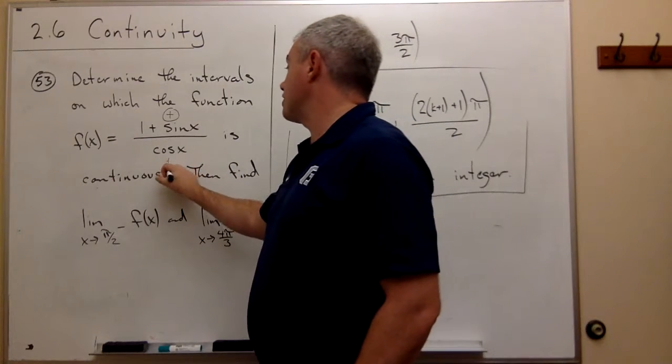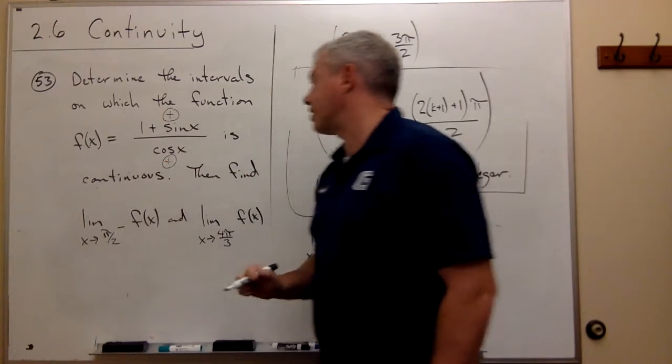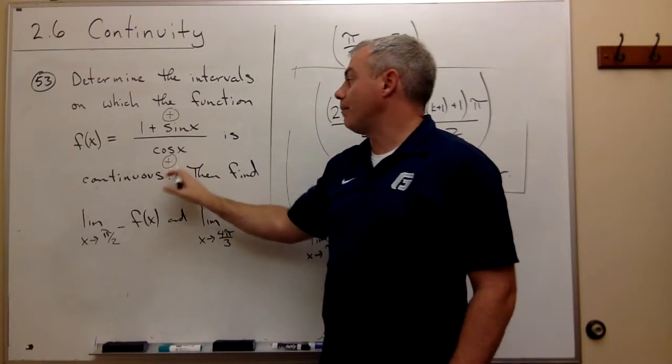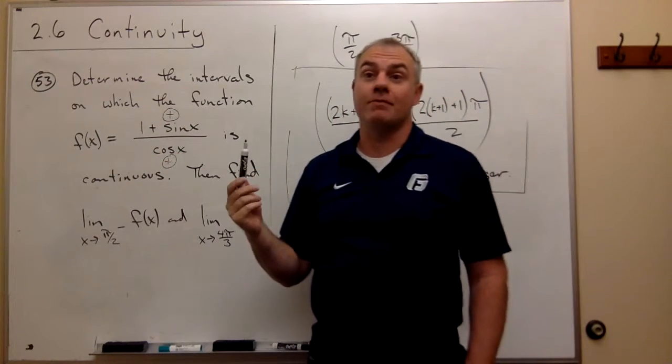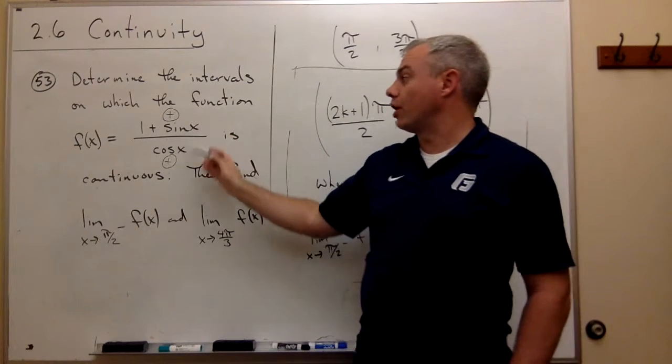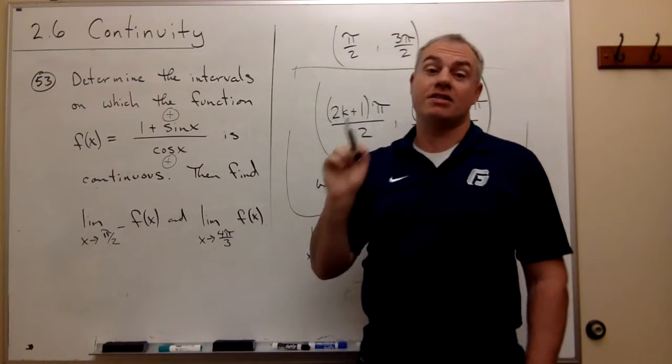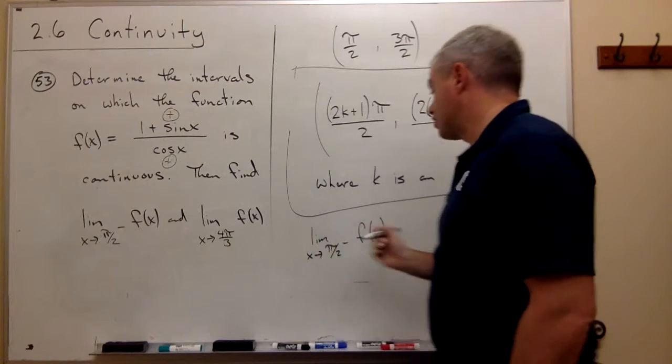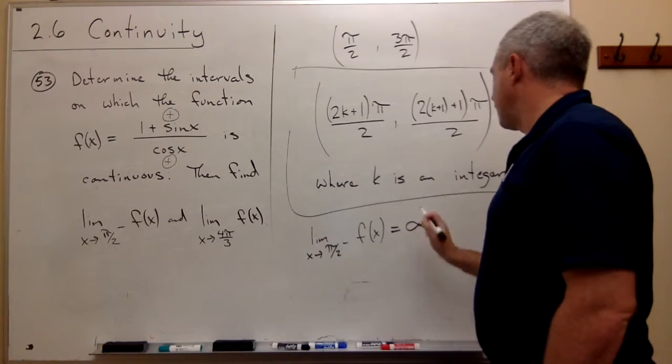So that means that cosine is also positive. So the top is positive and the bottom is positive. And I know that I'm either going to positive infinity or negative infinity. So which one must it be? It must be positive infinity. And so I can say that this limit is infinity.